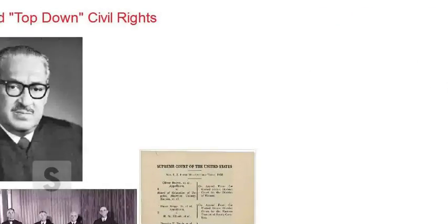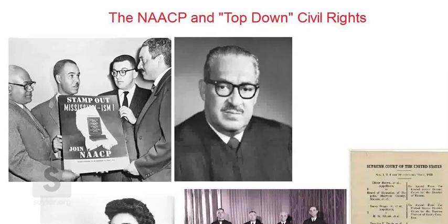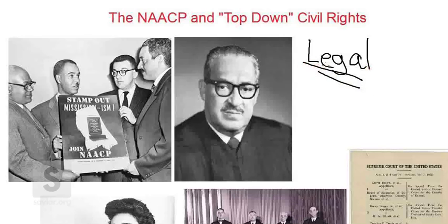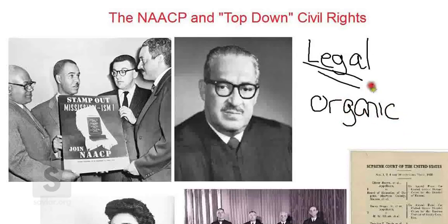We're going to talk about the two main approaches that come to define the civil rights movement in the United States in the 50s and 60s. One is a formal legal approach — a legal strategy to combating discrimination in the United States — ultimately carried out by the NAACP. The second approach is what I would call a more organic, grassroots approach that didn't necessarily have any formal order initially, but gradually becomes very important as more and more people become involved. So we have two strategies: a top-down strategy and a bottom-up strategy.